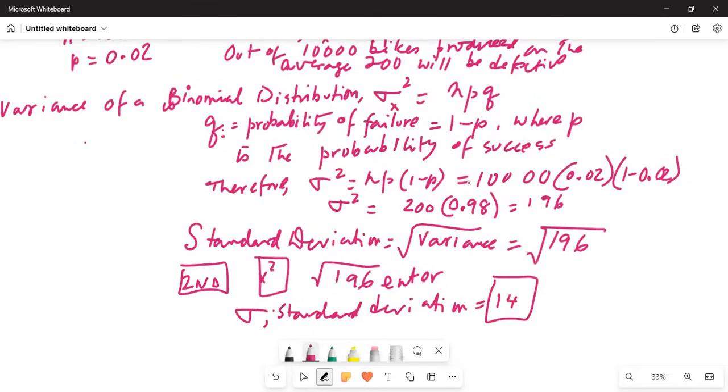What is standard deviation? The average deviation is an average deviation of number of defective bikes from the mean.